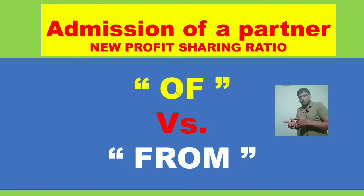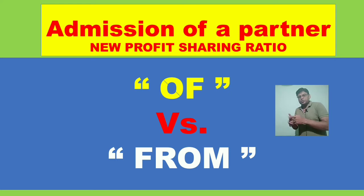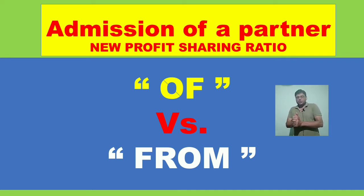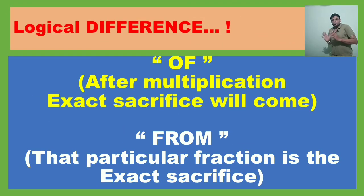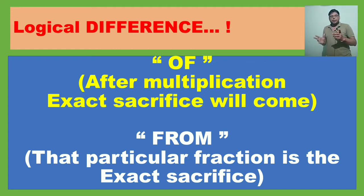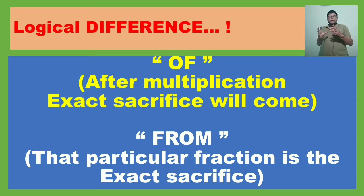Today I am going to discuss how to calculate the new profit sharing ratio at the time of admission of a partner by analyzing the term 'of' versus 'from'. The logical difference between 'of' and 'from': after multiplication, the exact sacrifice will come — that is the meaning of 'of'. If in a question somebody has sacrificed one-fifth of a share, that 'of' stands for multiplication. You have to multiply to get the exact sacrifice. But in case of 'from', that means she has sacrificed from his share — that is the exact sacrifice made.